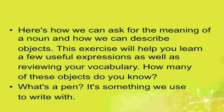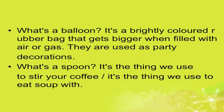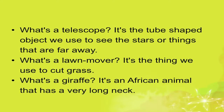Here is how we can ask for the meaning of a noun and describe objects. For example: What's a pen? It's something we use to write with. What is a balloon? It is a brightly colored rubber bag that gets bigger when filled with air or gas, used as party decorations. What is a spoon? It's a thing we use to stir coffee or eat soup. What is a telescope? It is a tube-shaped object used to see stars or things very far away. What's a lawn mower? It's the thing we use to cut grass.